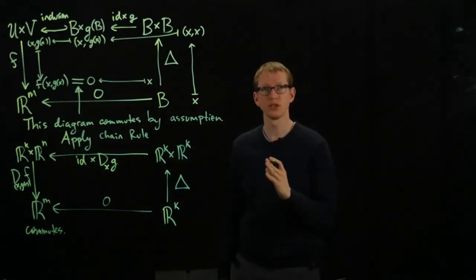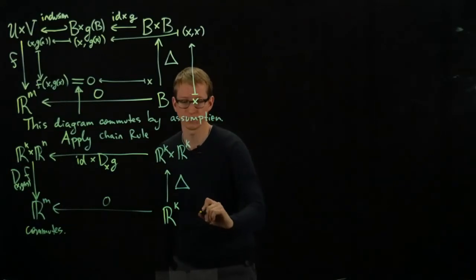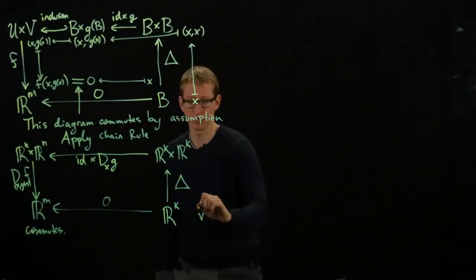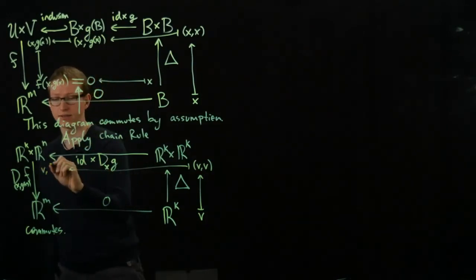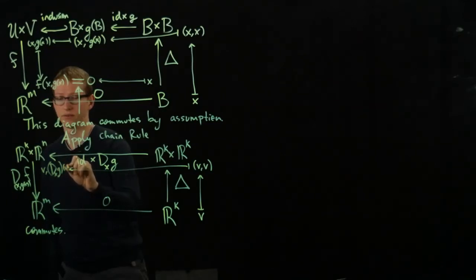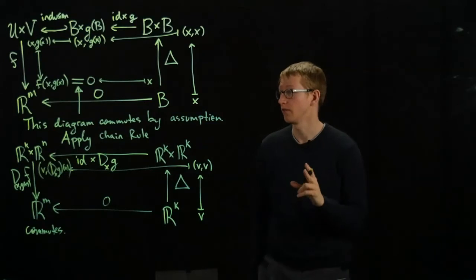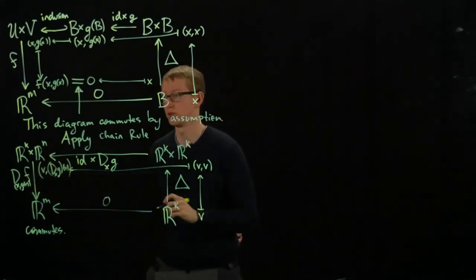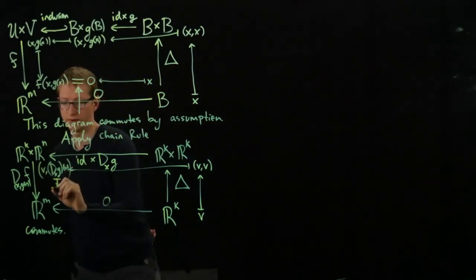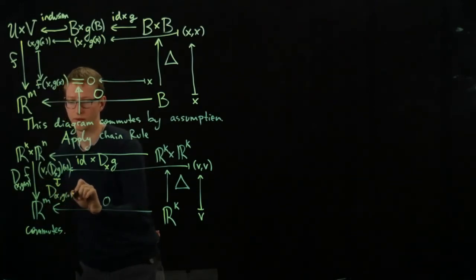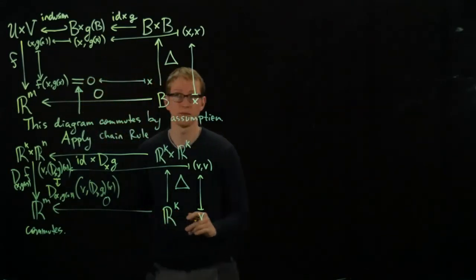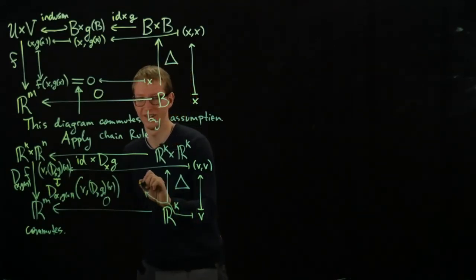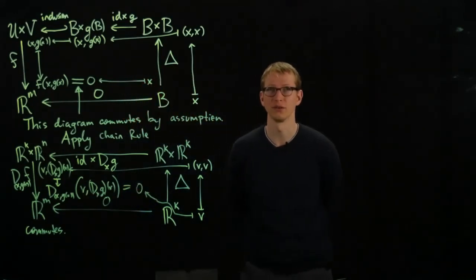And if we rewrite what it means, let's just look at what happens to a vector V when I apply this composition of linear transformations. V gets sent to V comma V. And this gets sent to V comma DX G applied to V. And by commutativity of this diagram, since V gets sent to zero, this implies that that expression is zero. And that's the proof.